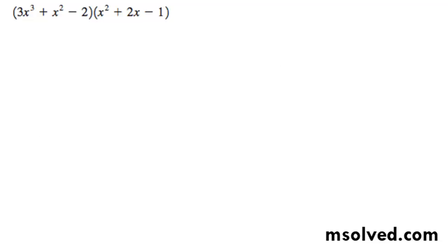So we want to distribute this and then simplify, starting off with the first term here. So 3x cubed times x squared, I'll just combine them right here to save time, so we end up with 3x to the fifth plus 2 times 3, so that's 6x to the fourth, and then minus 3x cubed.